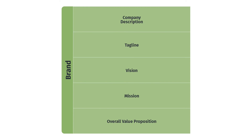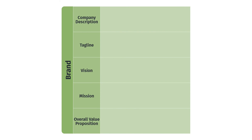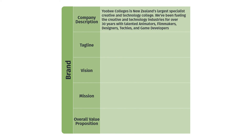So for UB, our company description is: UB Colleges is New Zealand's largest specialized creative and technology company. We've been fueling the creative and technology industry for over 30 years with talented animators, filmmakers, designers, techies, and game developers. Our tagline is: you make, you learn, and your creative career starts here.